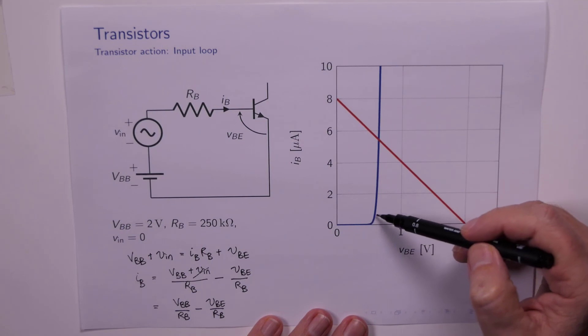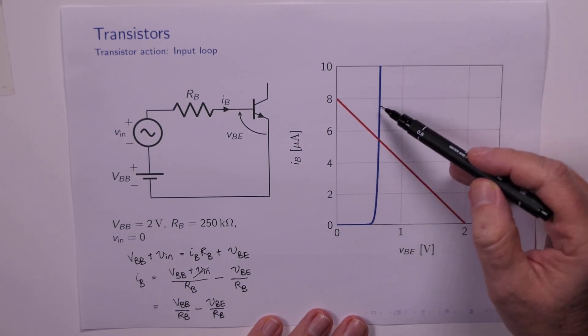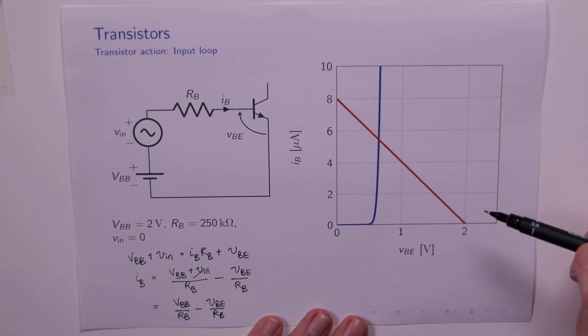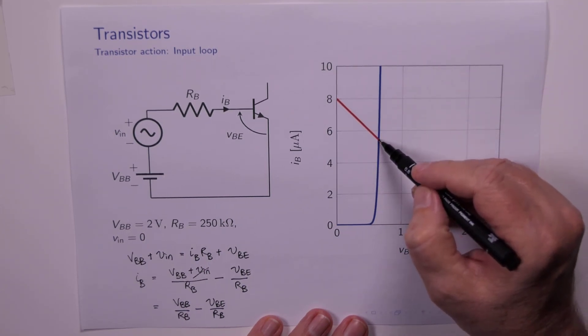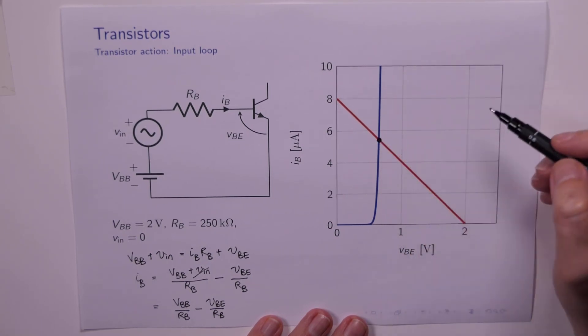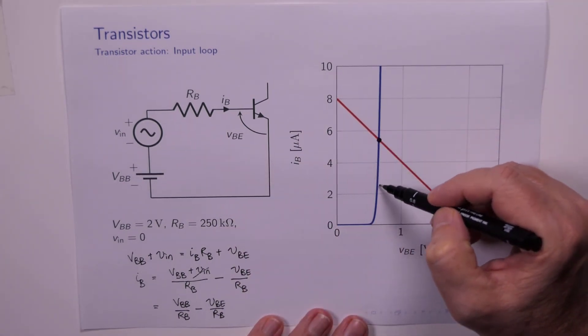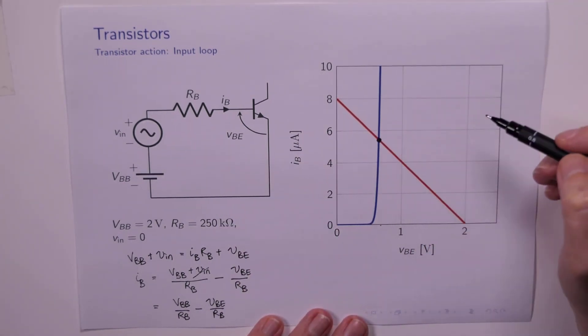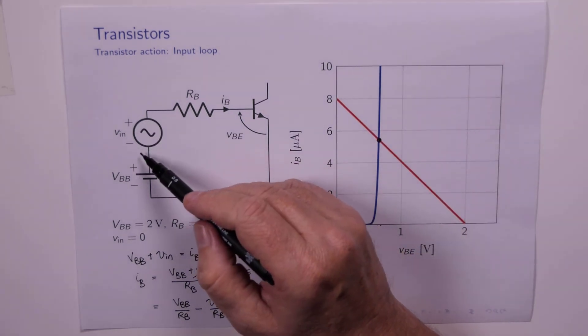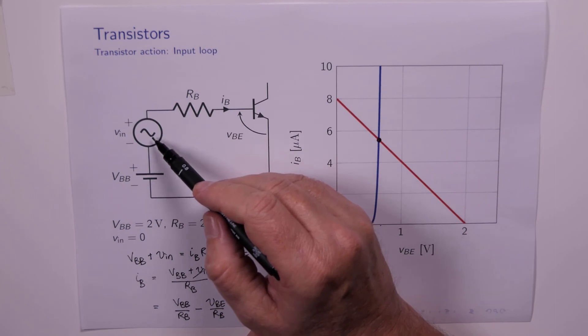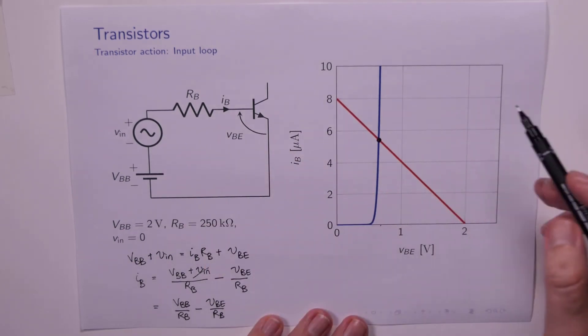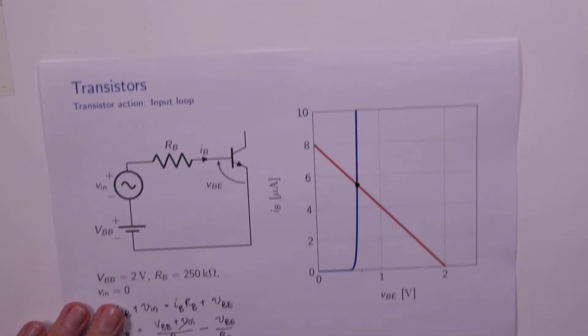In addition, we've got the input terminal characteristic of the transistor overlaid there, and clearly the operating point for the input loop when VIN is 0 is here. So when VIN is 0, this is the base current, this is the base emitter voltage. But we're really interested in understanding what happens as VIN moves away from 0. Well, let's see what happens.